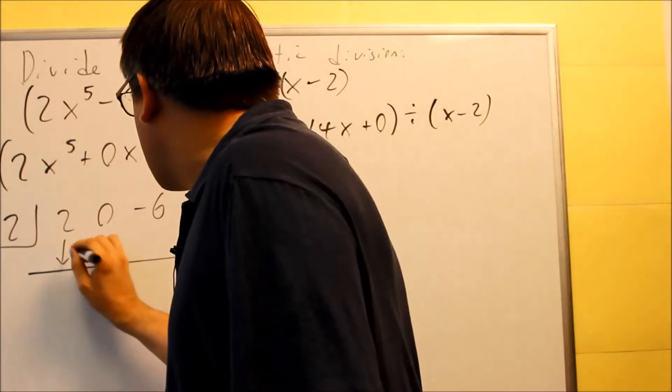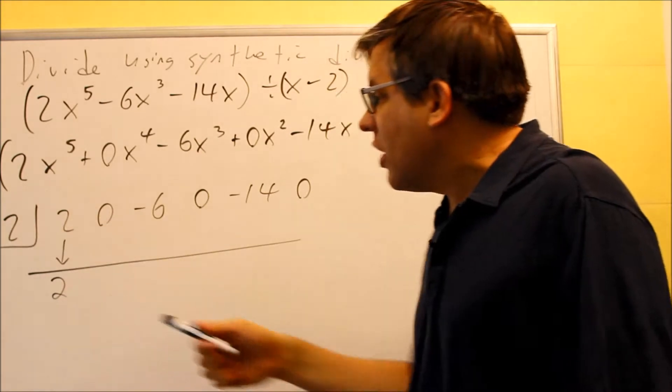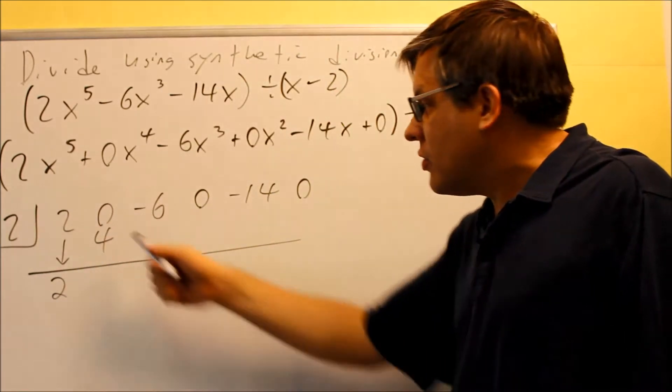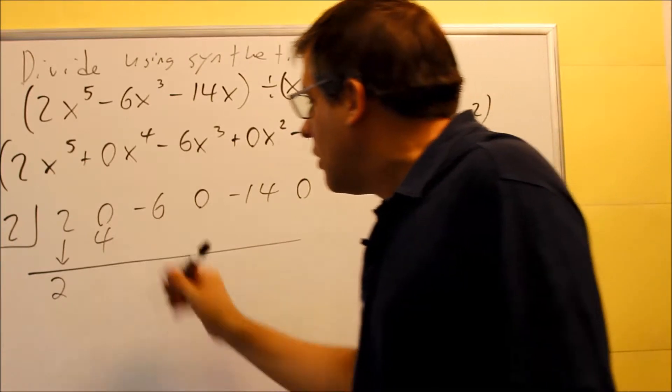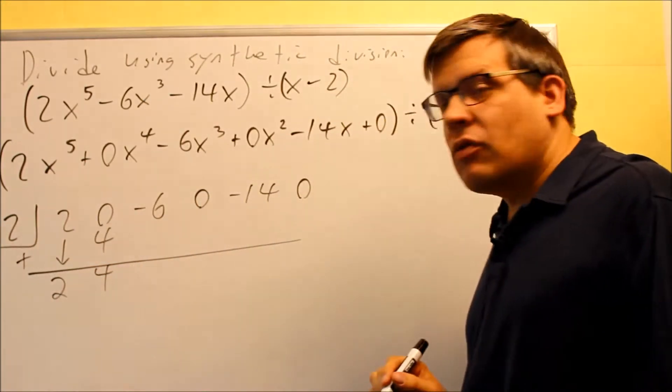Drop the 2 down. That's your first step. Drop the 2 straight down. You multiply these two numbers together. 2 times 2 is 4. Goes underneath the next 0 in the next column. Add that together. Always doing addition is your operation there. We have a 4.